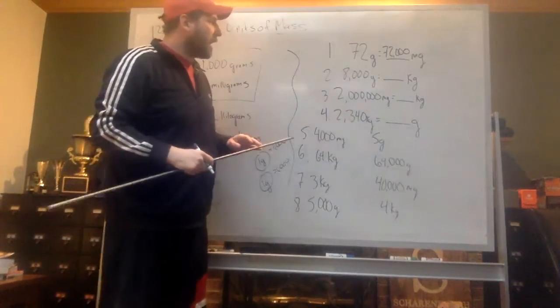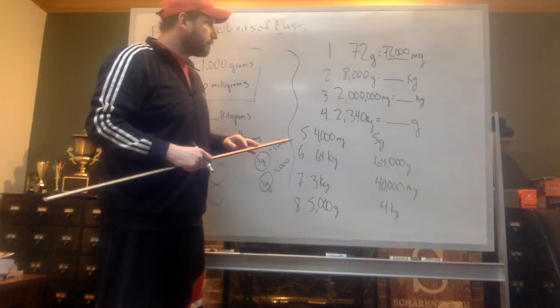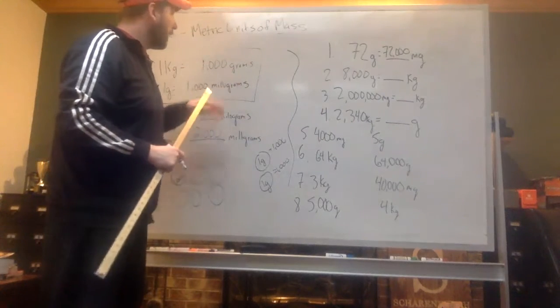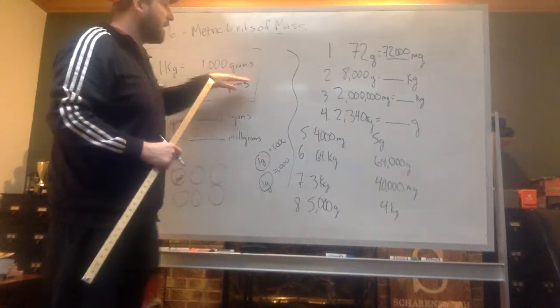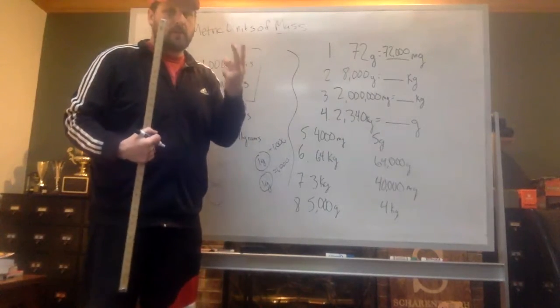For the next one, 8,000 grams is how many kilograms? So if we have every thousand grams equaling one kilogram, and now we have 8,000 grams, and every thousand is one, that means there's 1,000, 2,000, 3,000, 4,000, 5,000, 6,000,